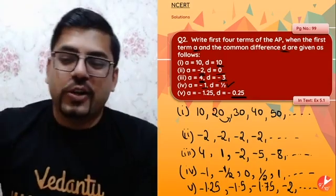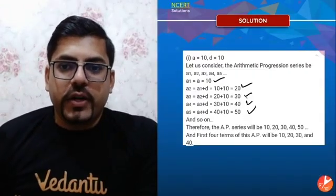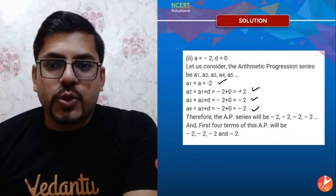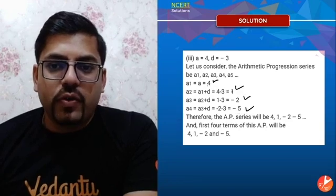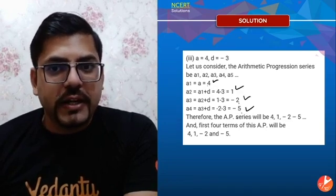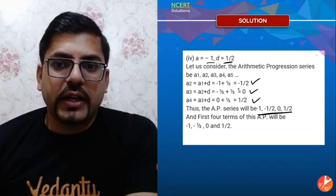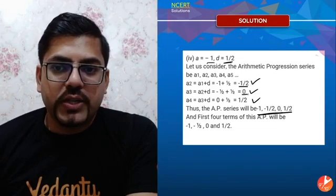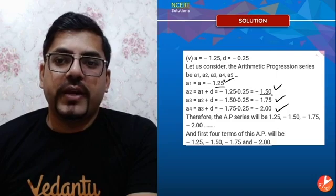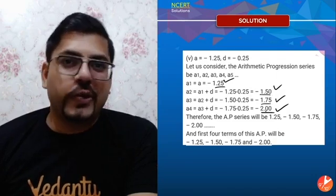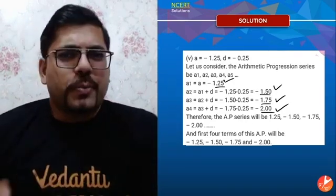Toh yeh ho gaya AP. Dekho mein solution bhi dikhaata hoon — pehle wale ka 10, 20, 30, 40. Doosre wale ka minus 2, minus 2, minus 2, minus 2 — sare minus 2. Teesre wale ka 4, 1, -2, -5, jaisa bataya tha. Chauthe wale ka D hai half, aur D half hone ke karan: -1, -1/2, 0, 1/2. Aur 5th wale ka bhi: -1.25, -1.5, -1.75, -2. Answer aa gaya.